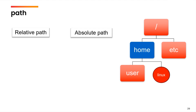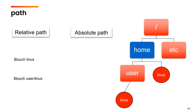You can simply specify the name of the file. In the relative path, if I want to create the file Linux, I will simply write 'touch Linux'. The system will assume that Linux is in the current working directory which is home. Now, if you want to create the Linux file inside the user directory, and you are currently inside home, you will write 'touch user/Linux', which means create the Linux file inside the user directory — which is inside the current working directory.